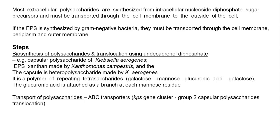Xanthan synthesis — a polysaccharide capsular material synthesized by Xanthomonas campestris — has also been studied in detail. The Klebsiella aerogenes capsular material is made up of heteropolysaccharides containing repeating tetrasaccharides composed of galactose, mannose, glucuronic acid, and galactose, with glucuronic acid attached as a branch at each mannose residue. After synthesis in the cytoplasm, they are transported via ABC transporter mechanisms — specifically the KPS gene cluster coding for ABC transporters — involved in group 2 capsular polysaccharides translocation.